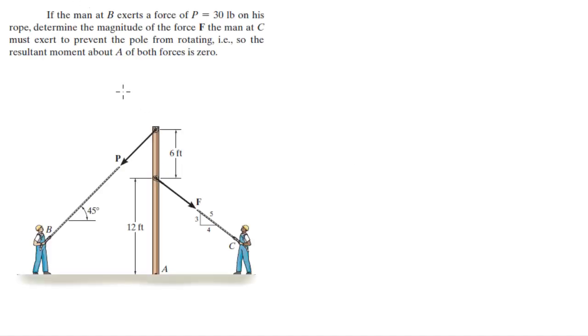For more videos visit forthesakeofedugation.com. Alright guys, we're going to do this problem that says if a man is exerting a force P of 30 pounds on his rope, find the magnitude of F that this guy has to create so that this whole thing won't rotate.